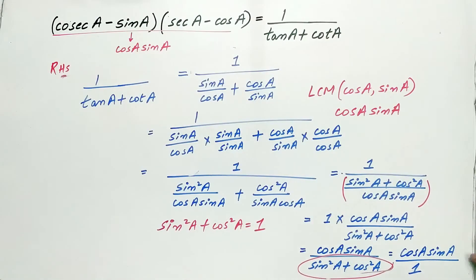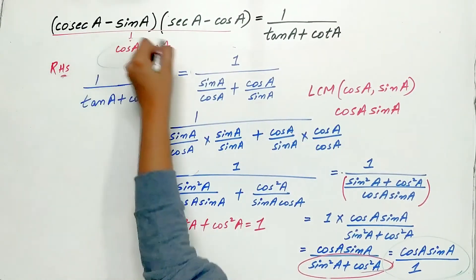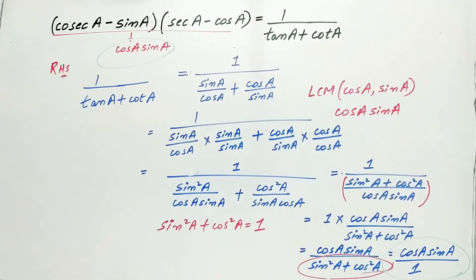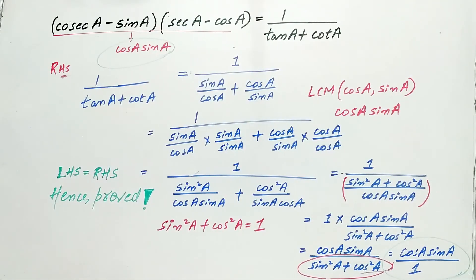Our right hand side equals cos A times sin A, which is equal to our left hand side. Hence proved. This brings us to an end of this question. If you have any doubts, let me know in the comments section.